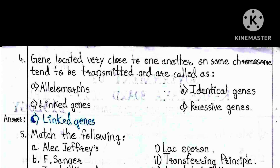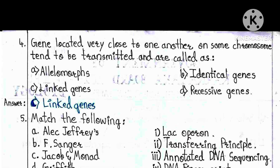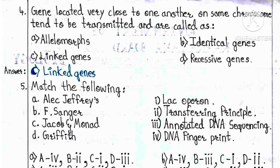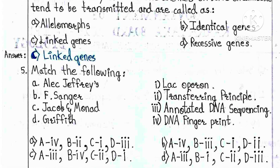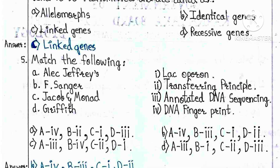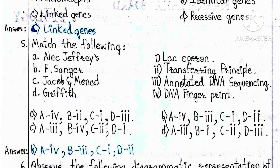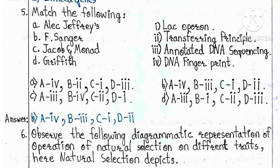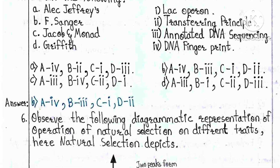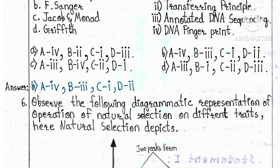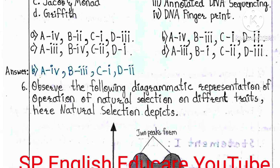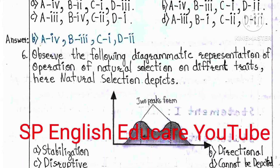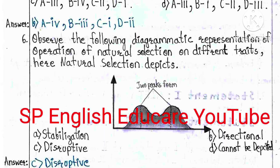Question 5: Match the following — A) Jeffrey: DNA fingerprint, B) Griffith: Transforming principle, C) Jacob and Monod: Lac operon, D) Sanger: Annotated DNA sequencing. The answer is B — A: fourth, B: third, C: first, D: second.